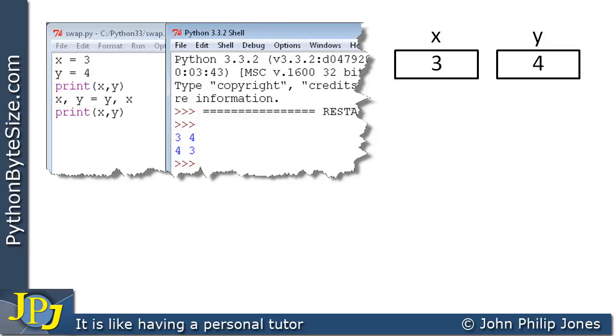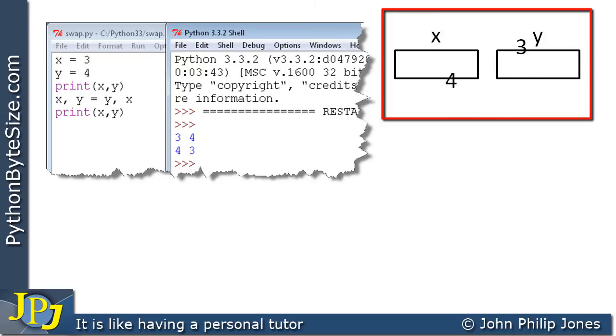But what Python has different is this here, look. And what this is saying, let x be assigned y, and let y be assigned x. And you can see there's a comma here, and there's a comma here. And what happens when we look at the animation, we can see that they simply swap with each other.